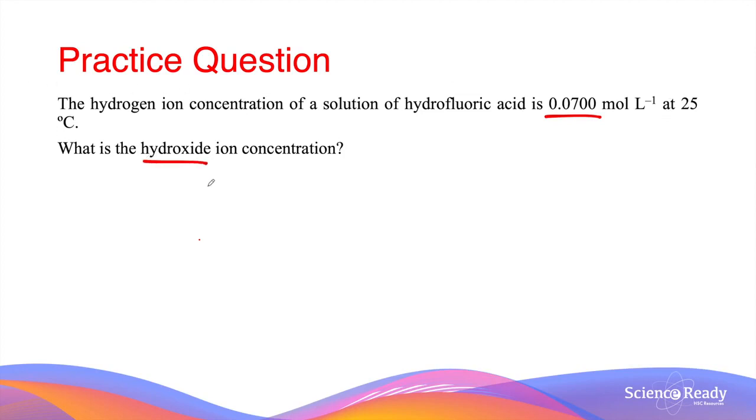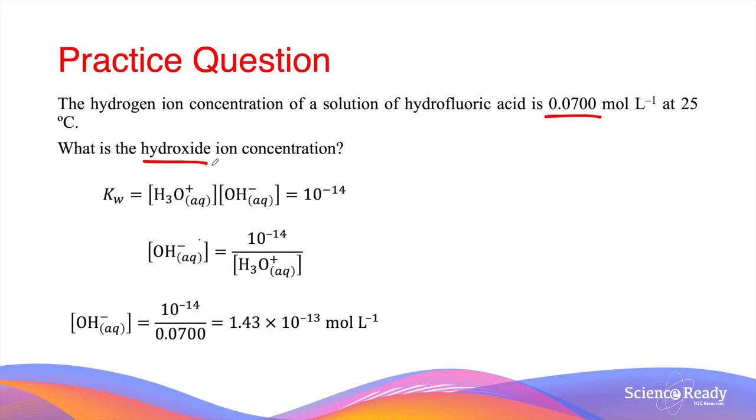What is the hydroxide concentration? For any aqueous solution, when you multiply the concentration of the hydronium ion by the hydroxide concentration, you always get 10 to the power of minus 14 at room temperature. So if we are given the concentration of hydronium ions, we can divide 10 to the power of minus 14 by that concentration to give us the concentration of hydroxide ions.